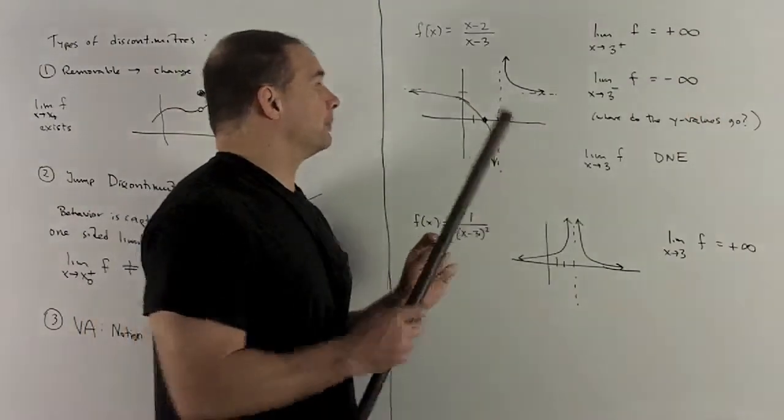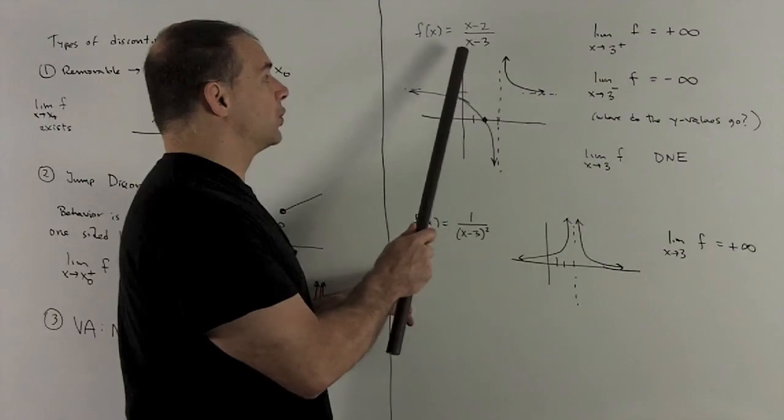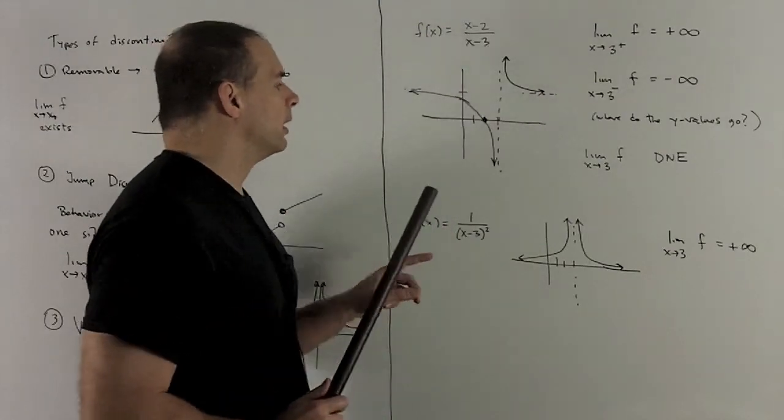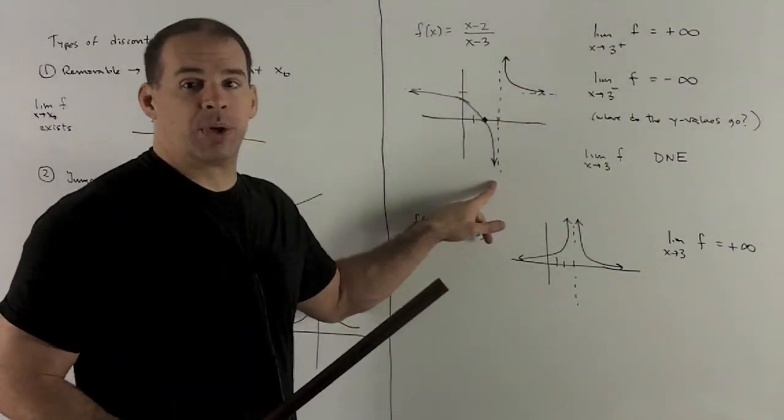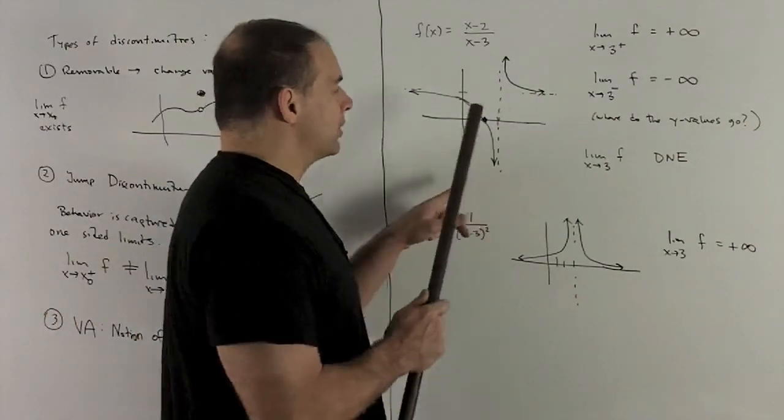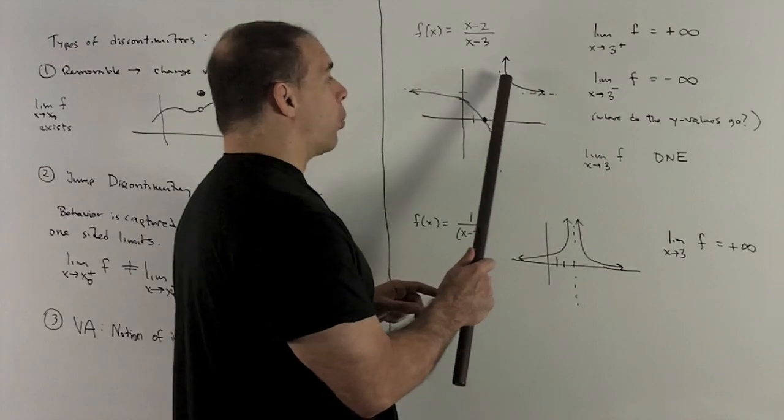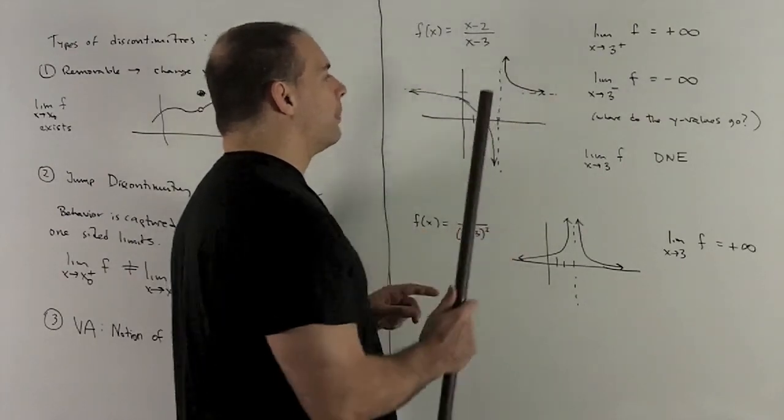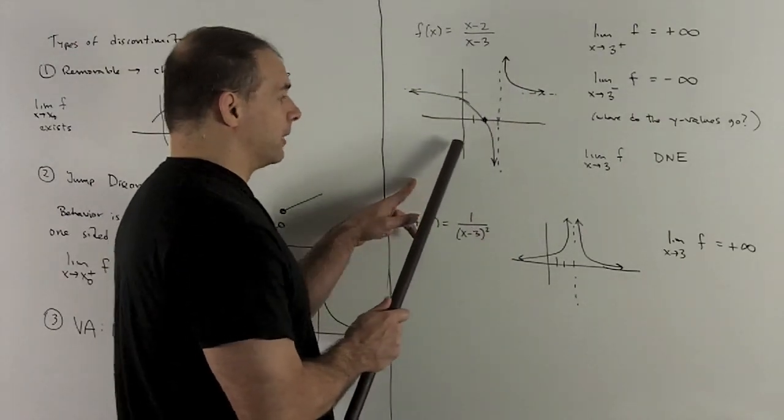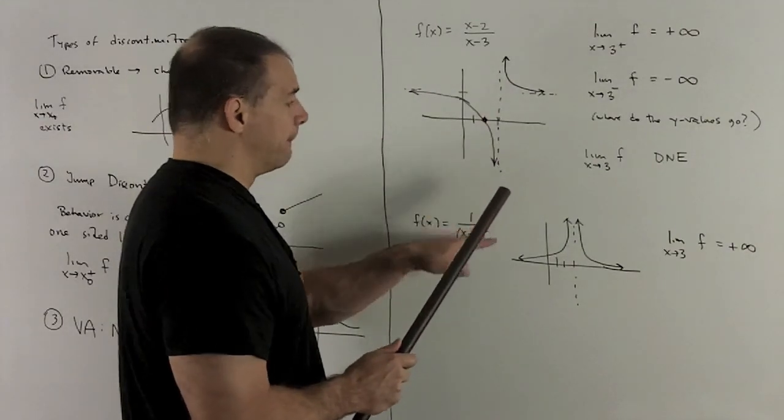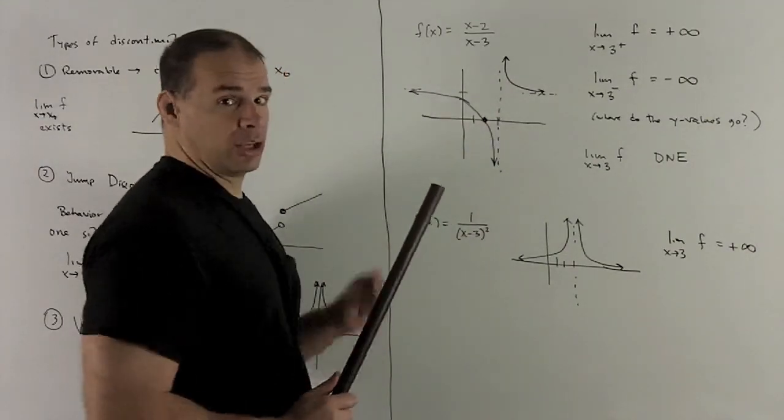Let's take a look at the function f of x equal to x minus 2 over x minus 3. Here, we're going to have a vertical asymptote at x equal to 3, and if you notice, as I come in to 3 from the right, our y values are going to keep getting larger without bound. As I come in to 3 from the left, our y values are going to get more negative and large without bound.